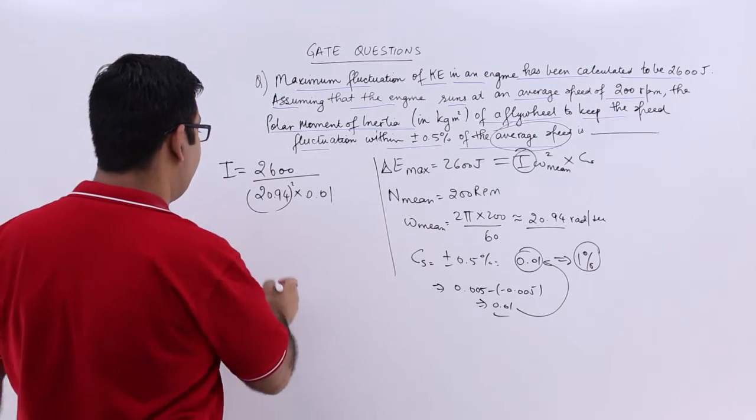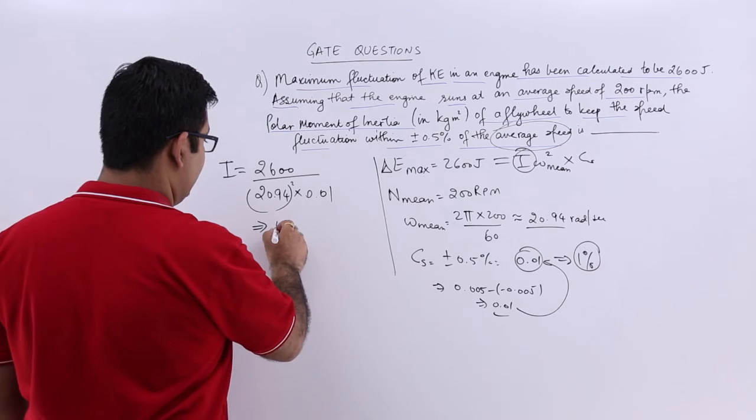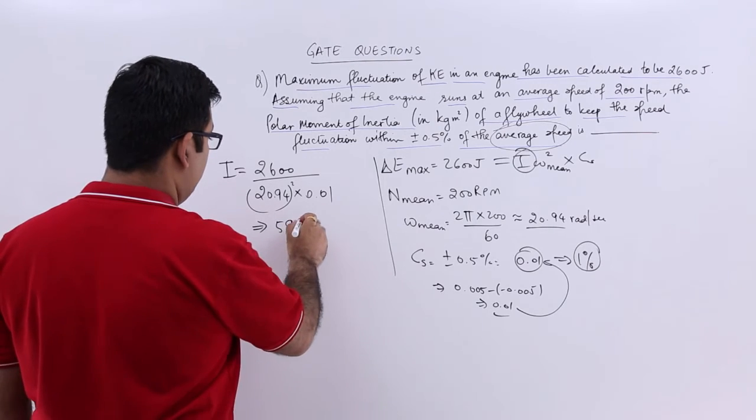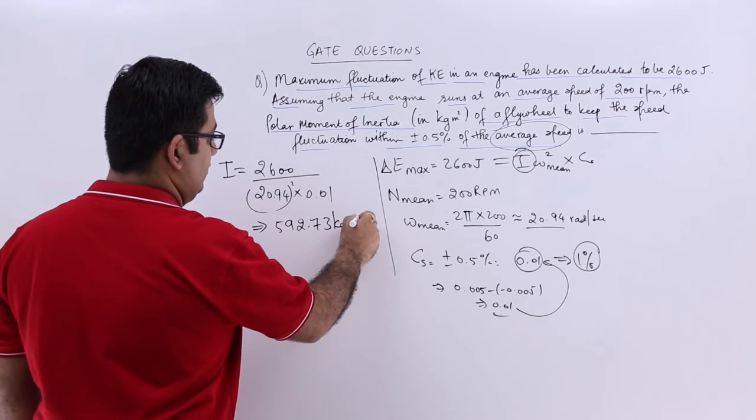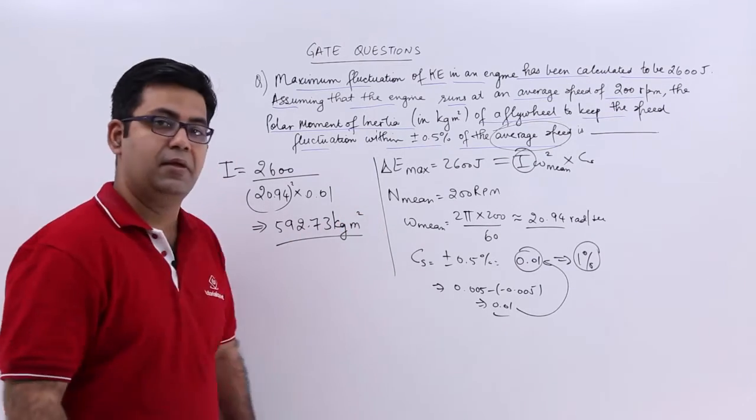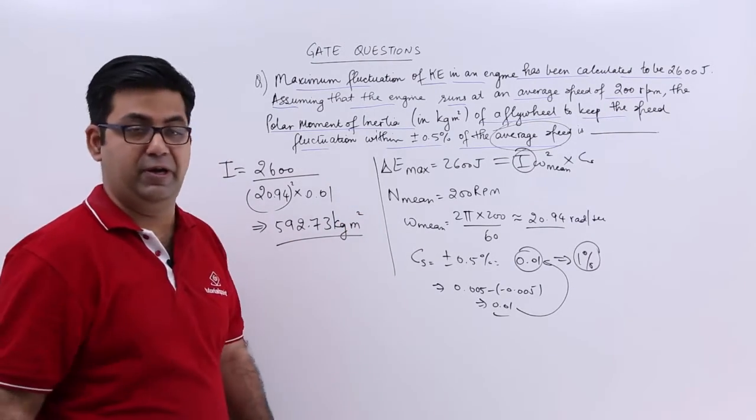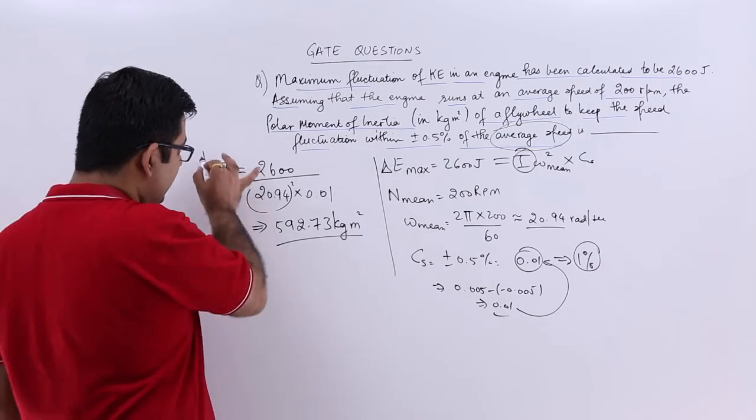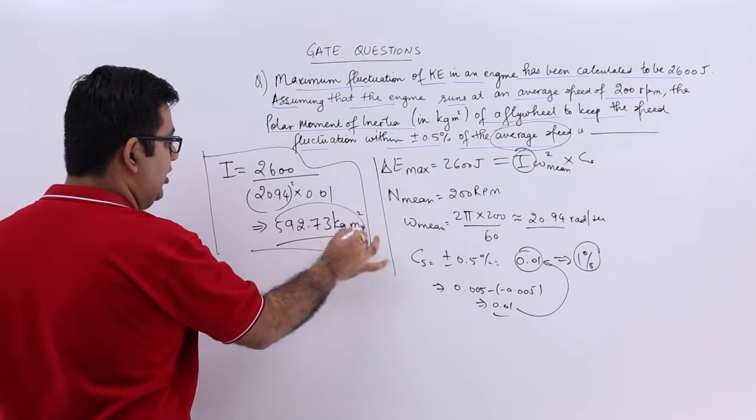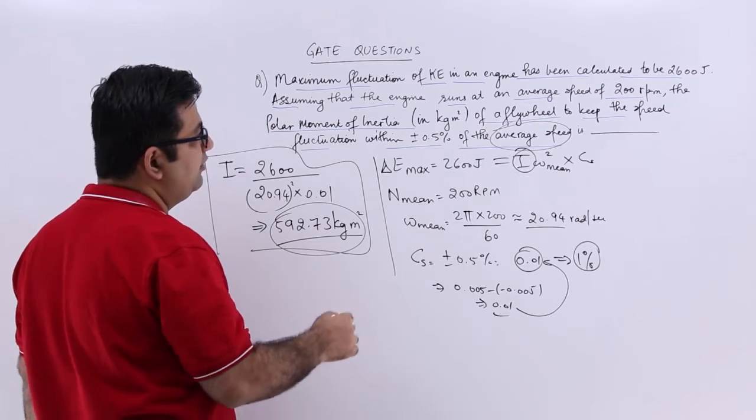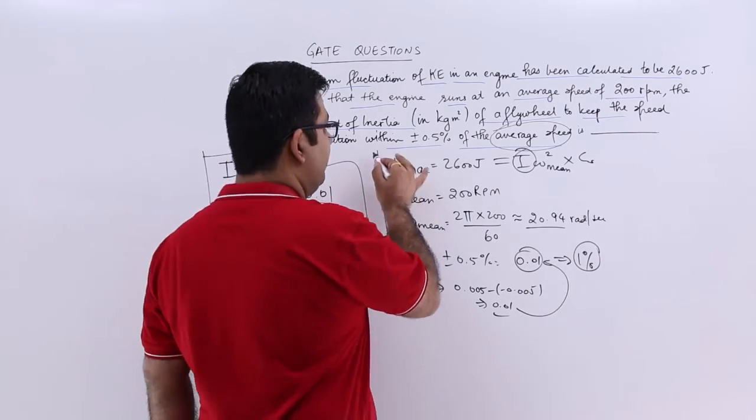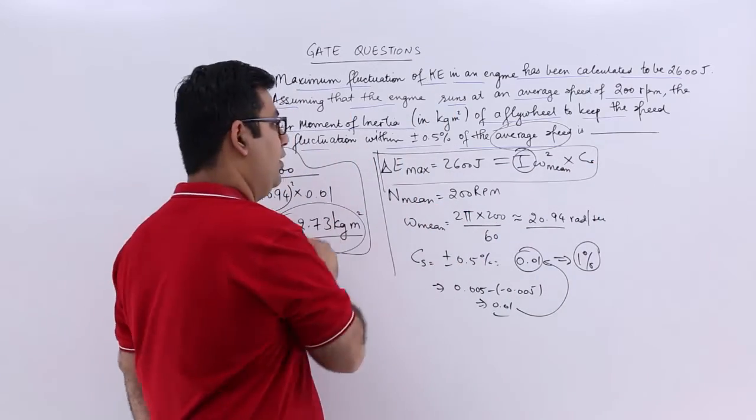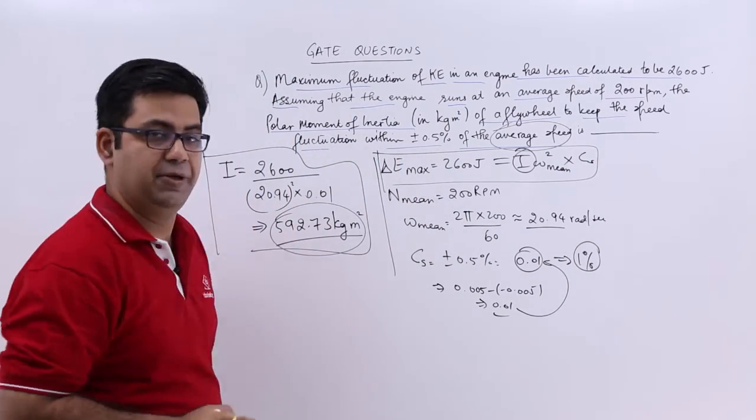This will give you a value of polar moment of inertia as 592.73 kg meter square, not per meter square but kg meter square. So this is the value we are looking to find out. Again, a very simple formula based question on flywheel. Remember this formula to calculate the maximum fluctuation in energy.